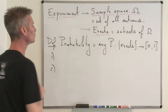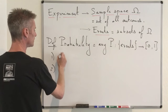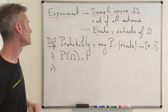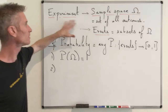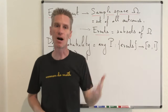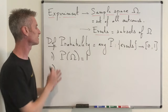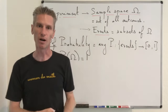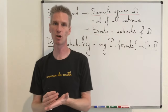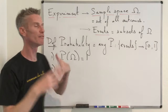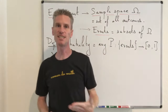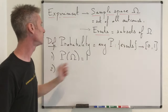The first axiom we need is that P(Omega) should be equal to 1. This makes sense: each time you have an experiment and its sample space, one of the outcomes must occur. If you roll two dice, the probability of getting any outcome — from (1,1) all the way through all 36 possible outcomes up to (6,6) — should equal one, because each time you roll your two dice, one of the 36 outcomes surely occurs.